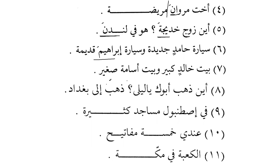Baytu Khalidin kabirun wa Baytu Usamata saghirun. Usama does not accept Tanwin or Kasra because it is a masculine name that ends with Ta Marbuta. So it will be Usamata.